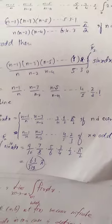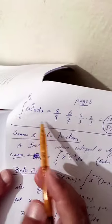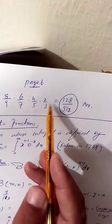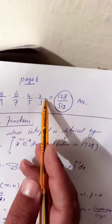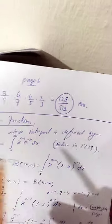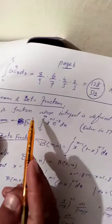Similarly, to find ∫₀^(π/2) cos⁹x dx, here n = 9 which is odd. The product becomes (8/9)(6/7)(4/5)(2/3)(1), with last term equal to 1, giving the required answer. Now we introduce some famous functions known as special functions: the Gamma and Beta functions.